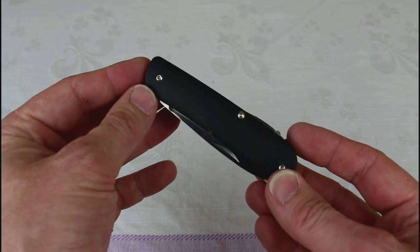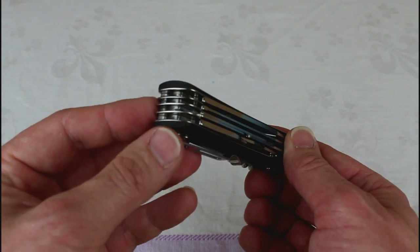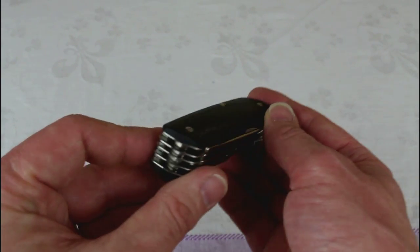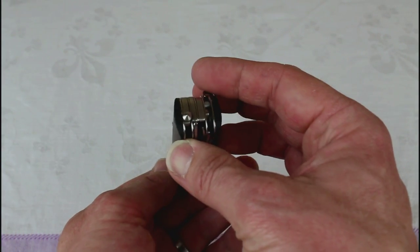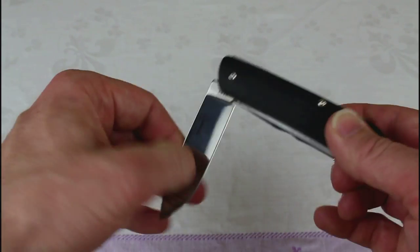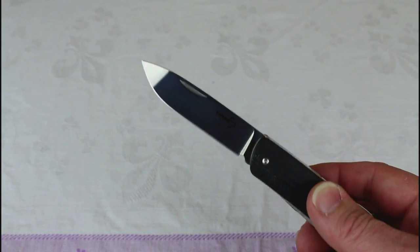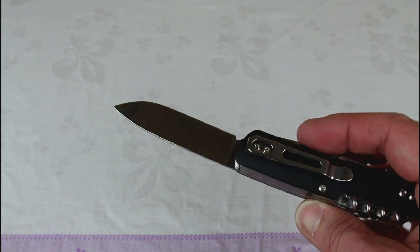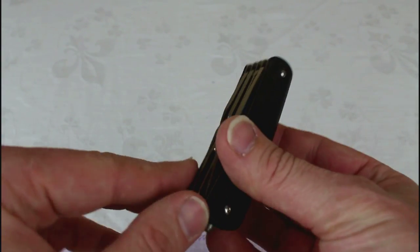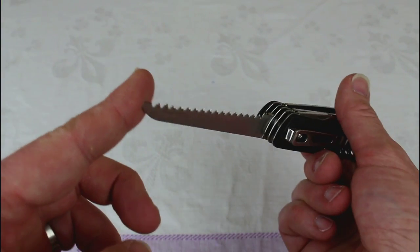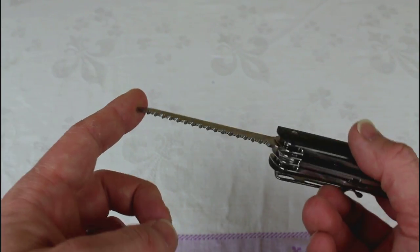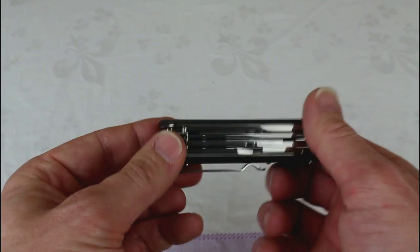Okay. Just coming in for some close ups now. You can see the nice pattern in the micarta there. Nice contouring. You can see there glass breaker tip. The main blade. The saw.